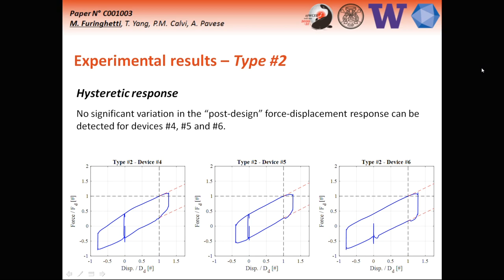For type two devices where the weld bead is considered, there is no increasing friction coefficient, and consequently no significant variation in the post-design response. This is mainly due to the smoother transition from the ordinary response to the extra stroke response due to the weld bead, and consequently the forced response has no significant variation in comparison to the ordinary response.